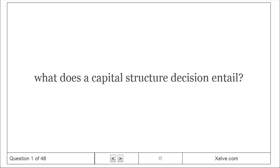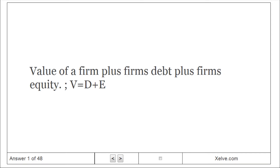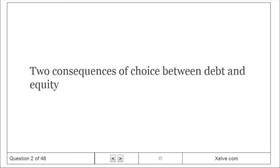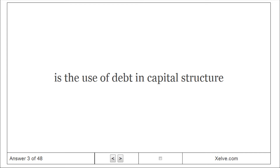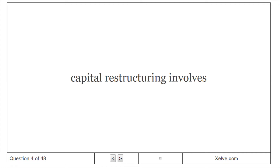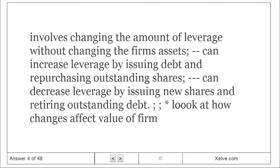What does a capital structure decision entail? The value of a firm equals the firm's debt plus firm's equity: V equals D plus E. Two consequences of the choice between debt and equity are risk and value. Leverage is the use of debt in capital structure. Capital restructuring involves changing the amount of leverage without changing the firm's assets. You can increase leverage by issuing debt and repurchasing outstanding shares, or decrease leverage by issuing new shares and retiring outstanding debt. The key question is how these changes affect the value of the firm.